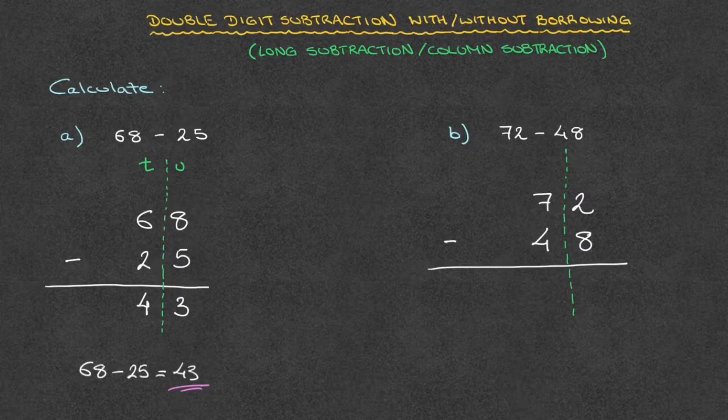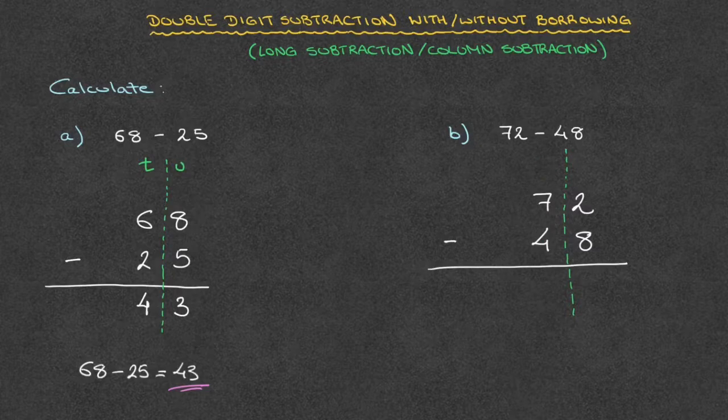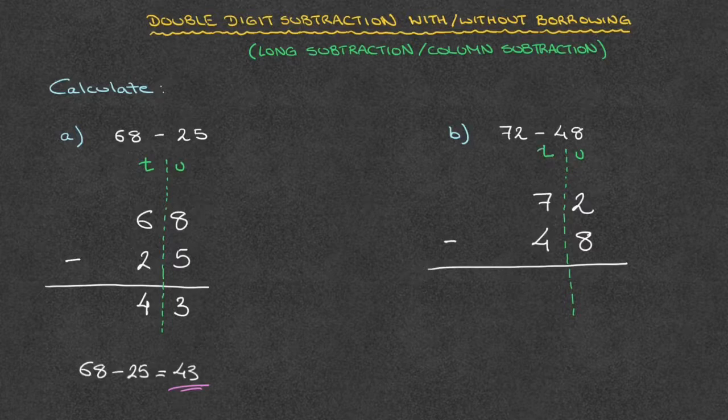This creates two columns: one column for the units or the ones, as well as a second column for the tens. At the top of the units column I'll write U, and at the top of the tens column I write a T. We're now all set. Just as before, we start with the units column.